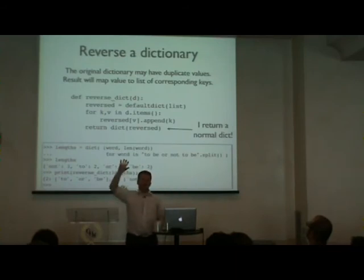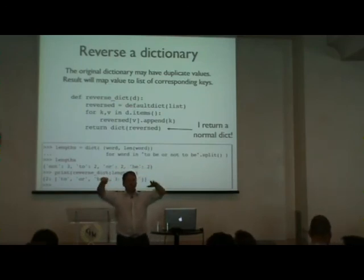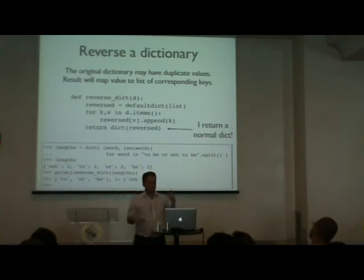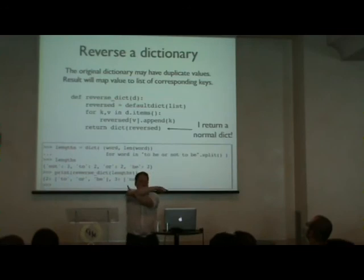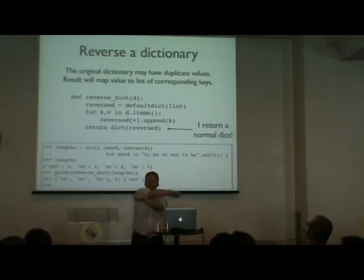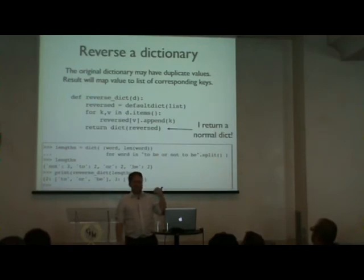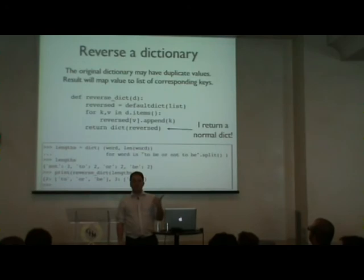You can also use defaultdict(list) for cases where you might have used setdefault. For example, reversing a dictionary: you have a mapping of words to lengths, and you want to reverse it to map lengths to lists of words. You can use setdefault, but the overall better way is defaultdict(list). I'll show you how to do that reversal.